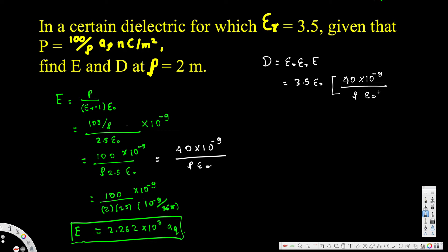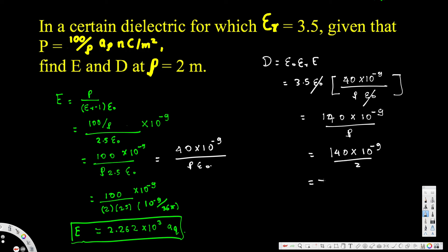After epsilon_naught cancels, we have 3.5 times 40 times 10 to the power of minus 9 divided by rho. That gives us 140 times 10 to the power of minus 9 divided by rho. Plugging in rho equals 2, we get 140 times 10 to the power of minus 9 divided by 2, which equals 70 a_rho nanocoulombs per meter squared. This is our final D value.